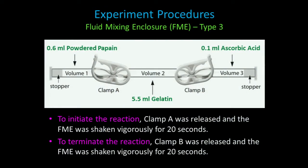We were fortunate enough that NanoRacks allowed us to use a Type 3 FME. In the first volume, we placed our papain, which was our enzyme. In Volume 2, we placed our gelatin, which was our substrate. To activate the reaction, you undo Clamp A and shake for 20 seconds. In Volume 3, we put our ascorbic acid — vitamin C — which stopped the reaction and shut down the enzyme so we could get an accurate reading of the remaining protein. To activate that, you undo Clamp B and shake for 20 seconds.